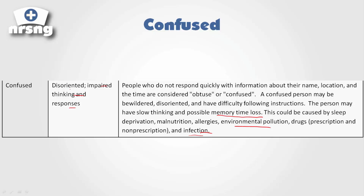When they're confused, they're disoriented and may not be able to respond to their name, location, or time at all. These patients can go from a very alert level of consciousness to confused very quickly, so it's important to assess that very often. In the neurological ICU, we assess level of consciousness at least every two hours, sometimes every one hour or even more, depending on the patient's condition.